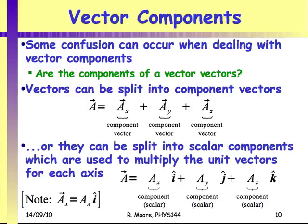A question that sometimes comes up: are vector components scalars or vectors? It depends on how you write it. If you write just x, that's a scalar — it doesn't have a direction; the direction is encoded elsewhere. If you write it as x-hat, that's a component vector because the direction is encoded in it. I'll tend to write things as scalar components rather than component vectors. Always keep your arrows or preferred notation so you don't lose track of whether you're talking about vectors or scalars.